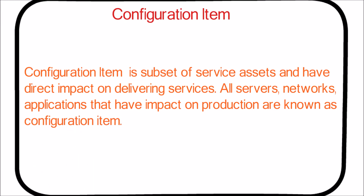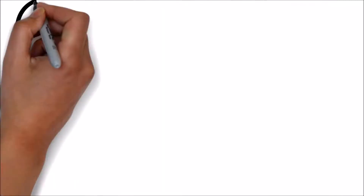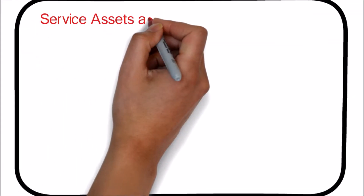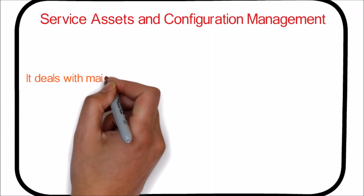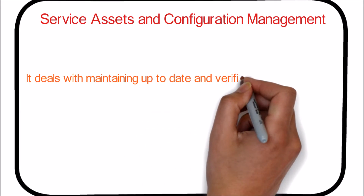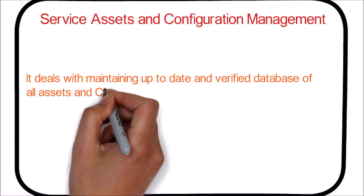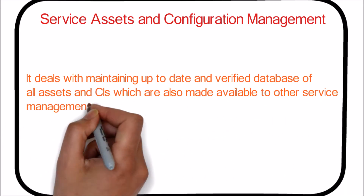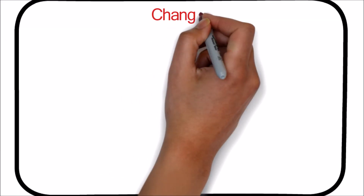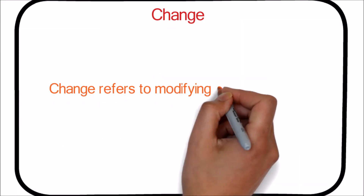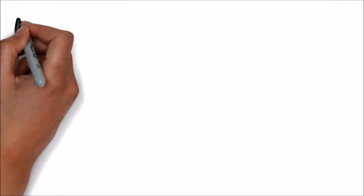All servers, networks, and applications that have an impact on production are known as Configuration Items. Service Assets and Configuration Management deals with maintaining an up-to-date and verified database of all assets, also made available to other service management processes. Change refers to modifying existing services.